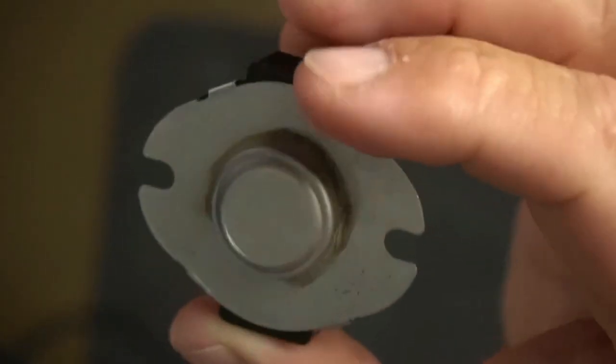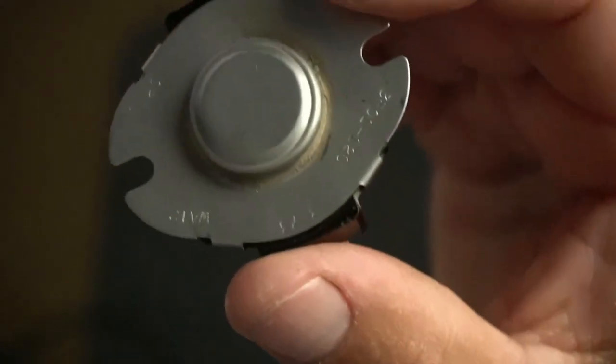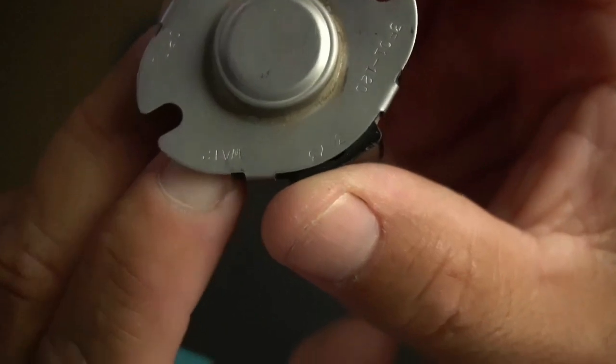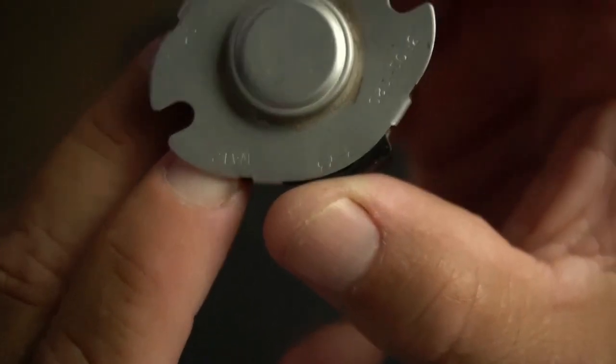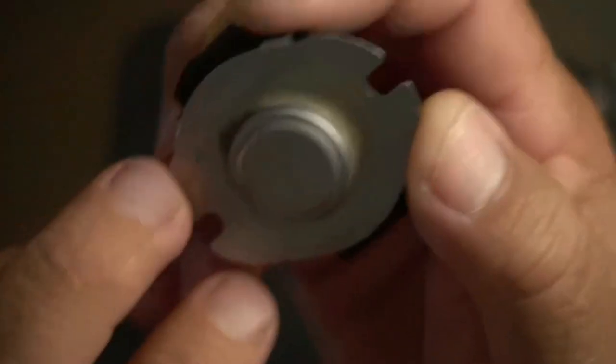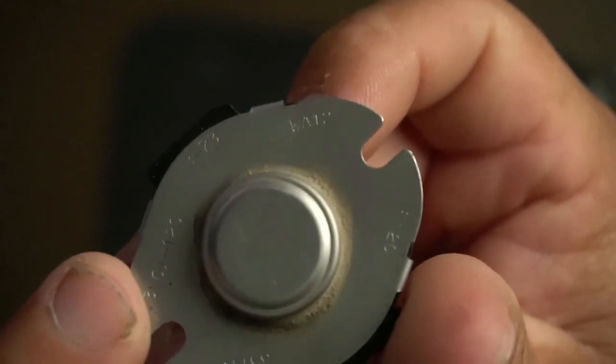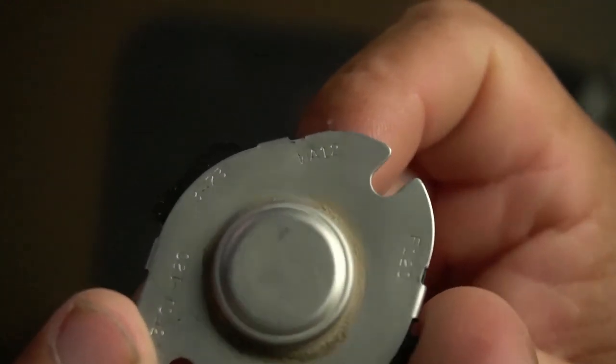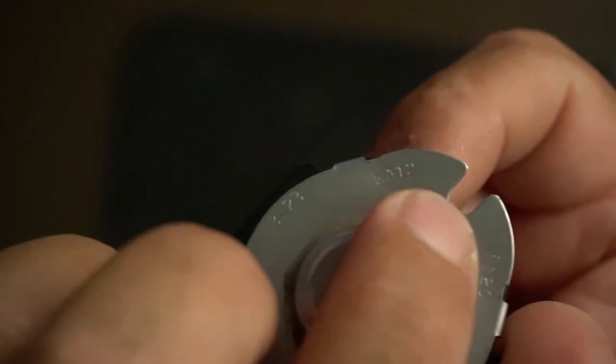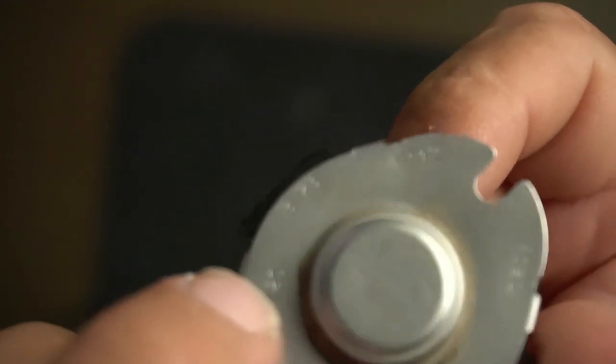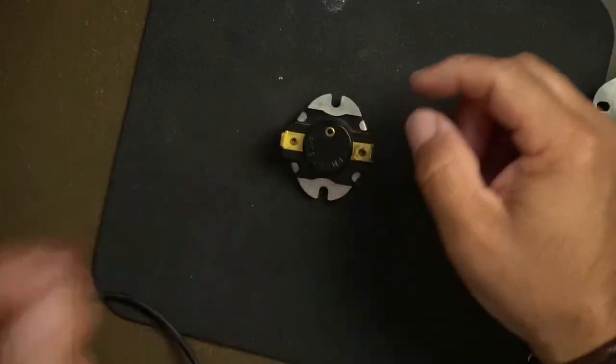You're going to read the plate or the sticker or whatever. On this one, it's kind of hard to show on the video, but when you see the numbers here, that right there says F120. So F means fan. So this is a fan switch, this is not a limit switch.